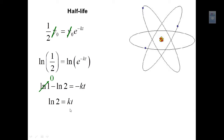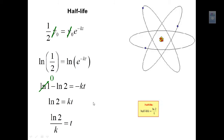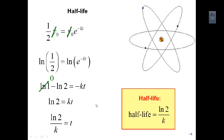We can solve for either variable from this one equation. Solving for the half-life — assuming we know k — gives us the half-life equation: t equals the natural log of two divided by the constant k.